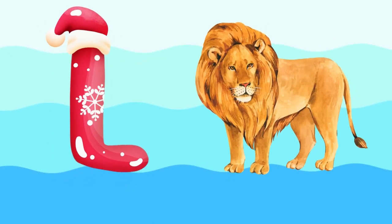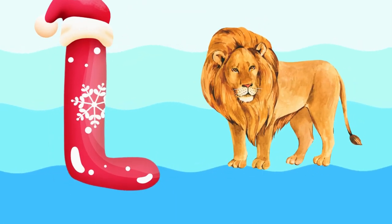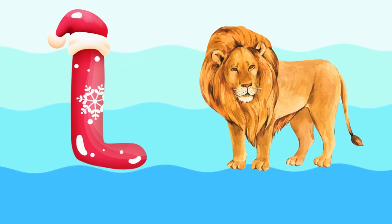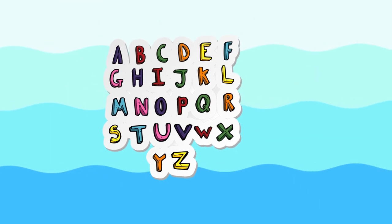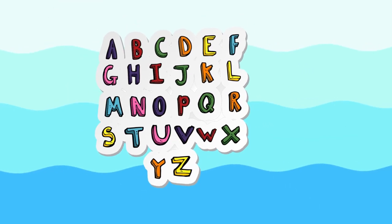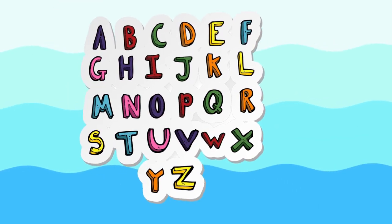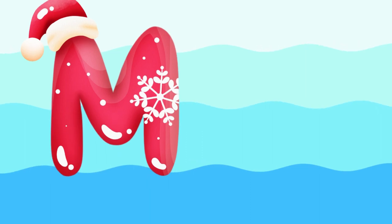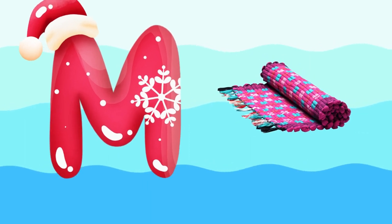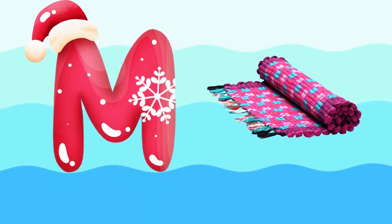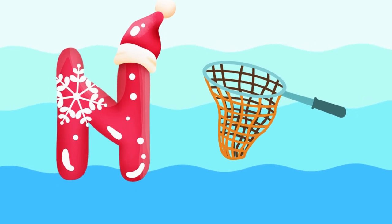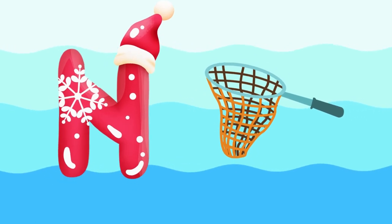L is for lion, l-l-lion. M is for mat, m-m-mat. N is for net, n-n-net.